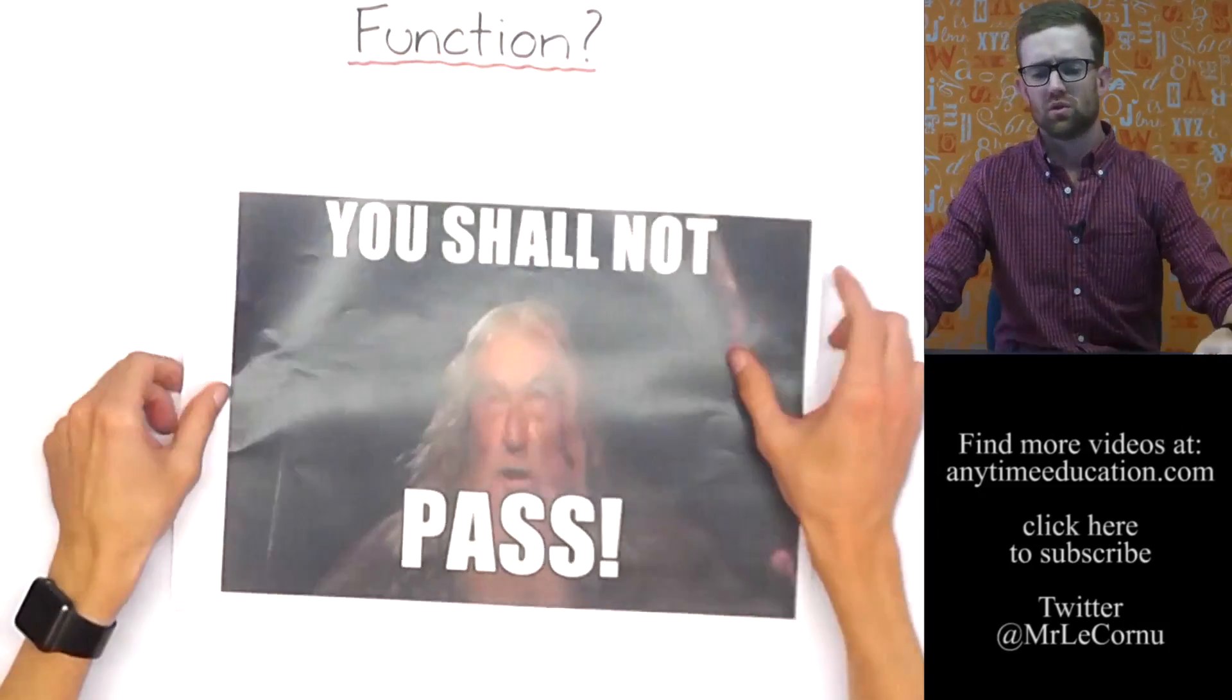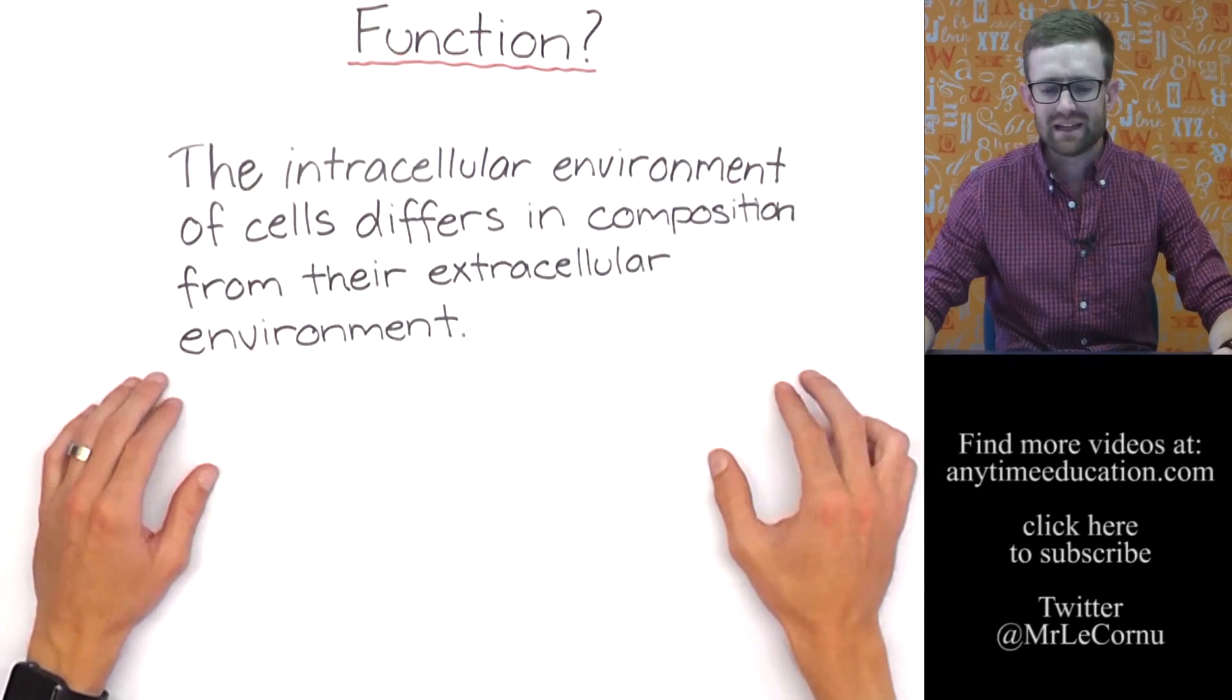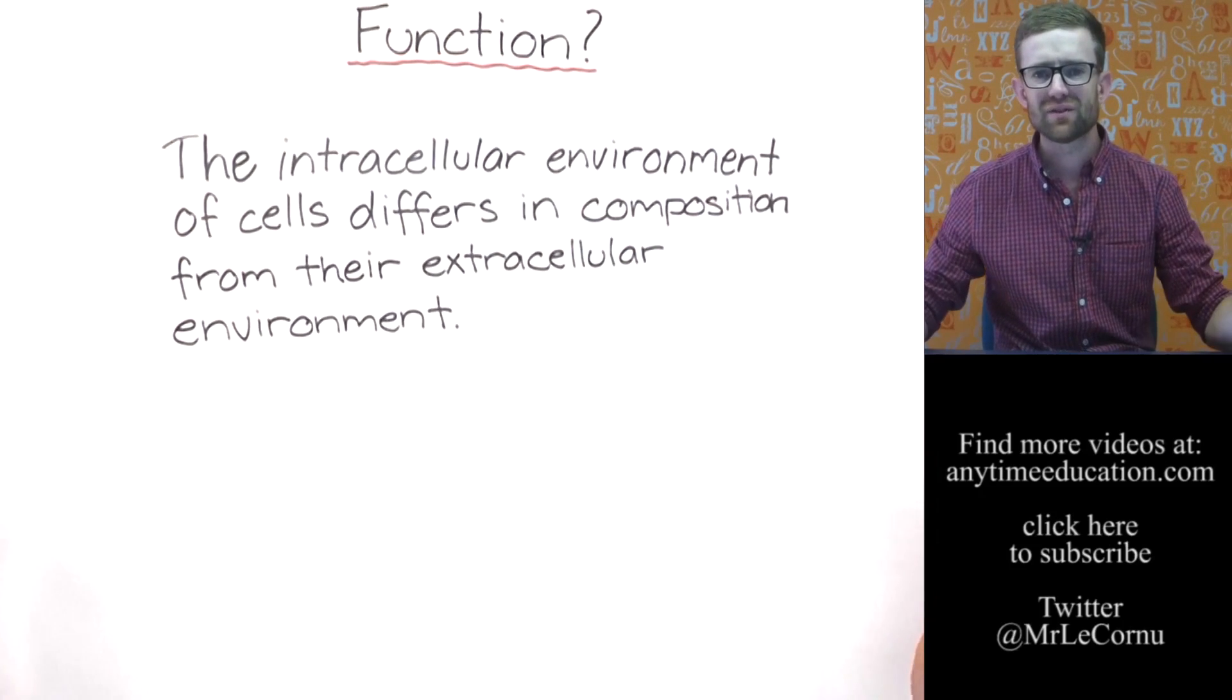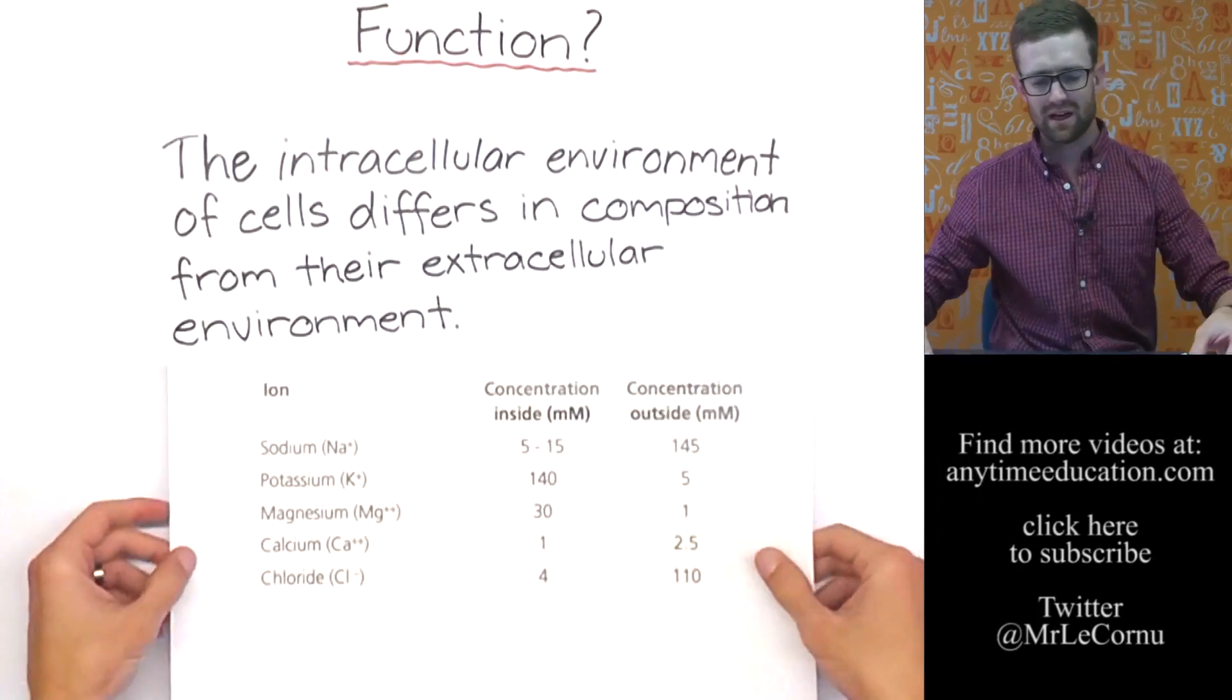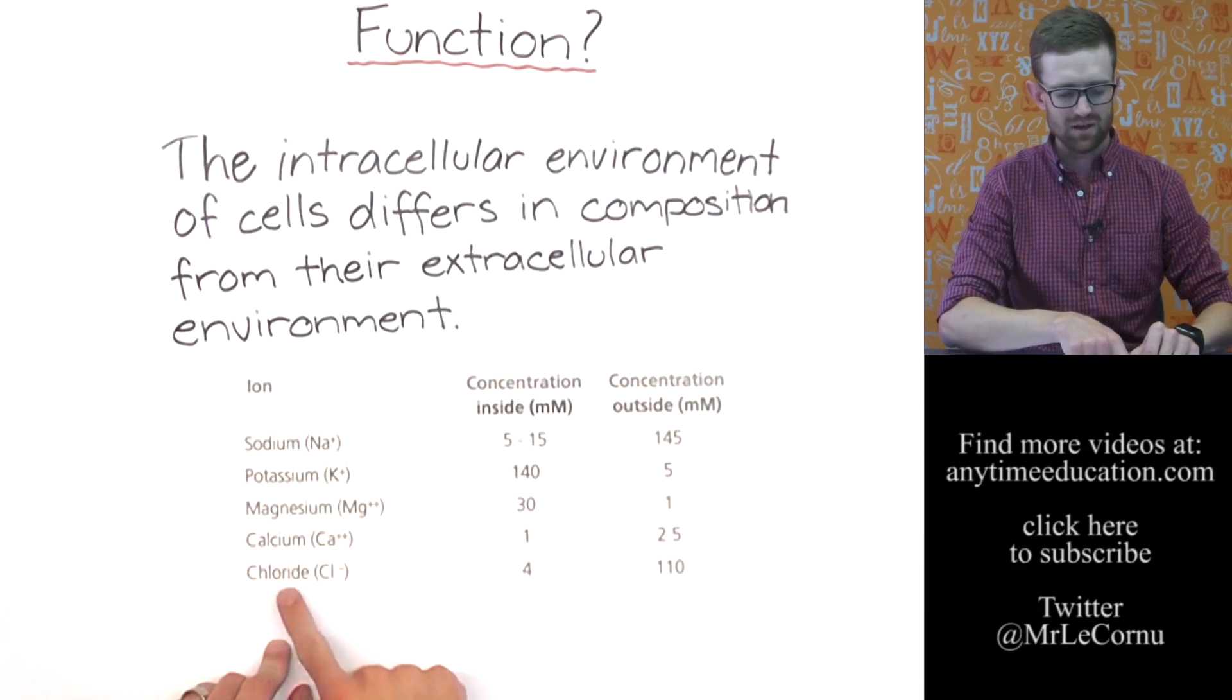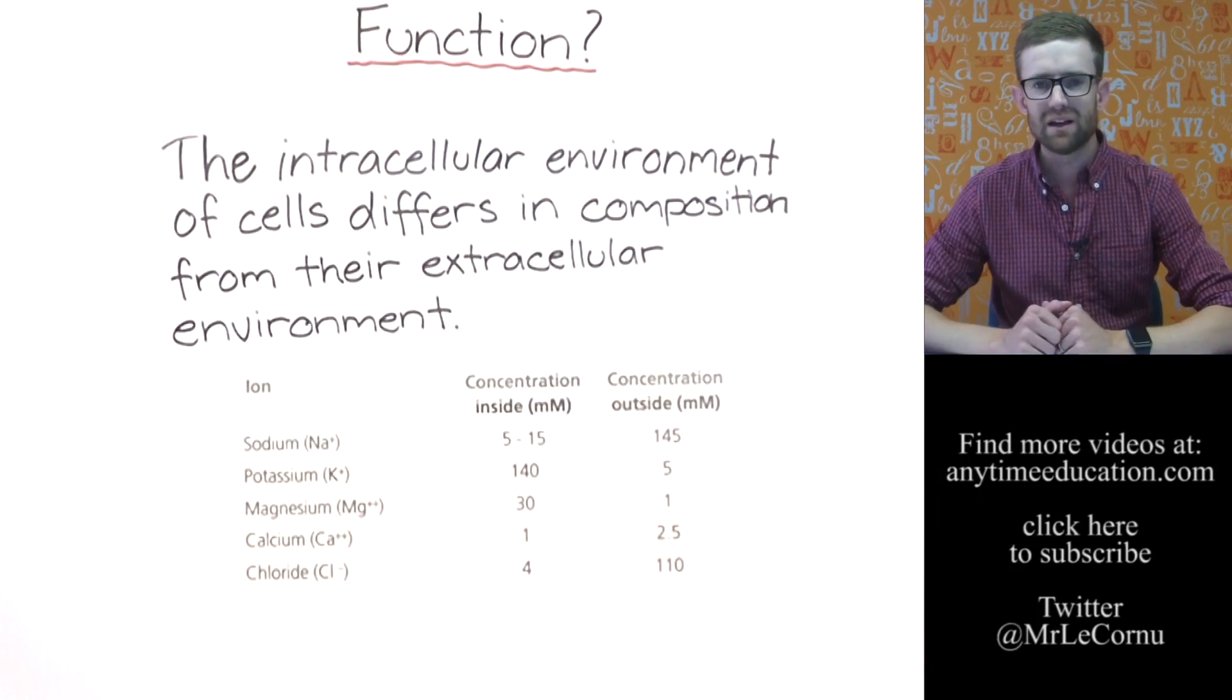You shall not pass! Got to stop bringing that in. It's important for this reason: the intracellular environment of cells differs in composition from their extracellular environment. What that means really simply is that outside of the cell is very different to inside of the cell, and that is intentional. Let me show you an example. These are the concentrations of some ions inside and outside of a human muscle cell, and you can see these are the ions here: sodium, potassium, magnesium, calcium, chloride. The concentrations are very different inside of the cell than they are outside of the cell.